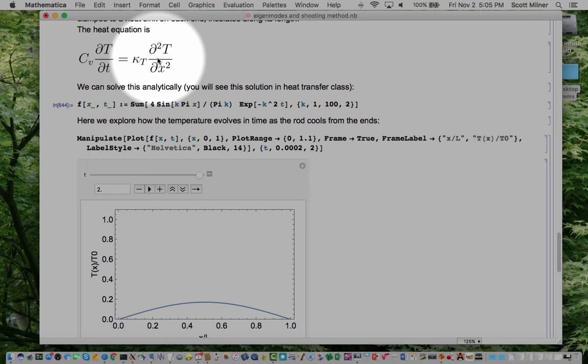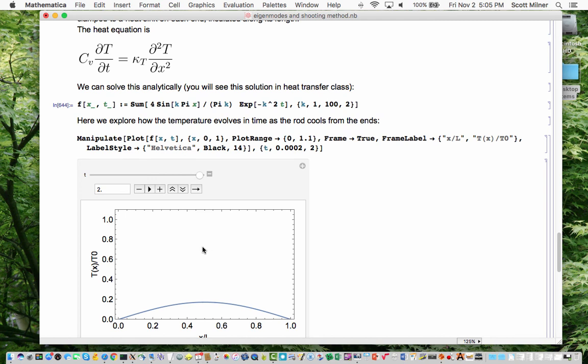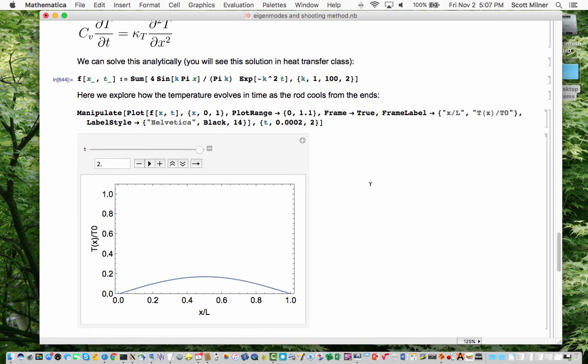C sub v is the heat capacity of the rod per unit length. This is the time derivative of the local temperature along the rod. Kt is the heat transfer coefficient. And this is the second derivative of the temperature along the rod with respect to space. So this looks a lot like the wave equation except that you don't have two time derivatives over here. And what we're seeing in the little movie is what looks like maybe it's an exponential decay of the profile after a while.